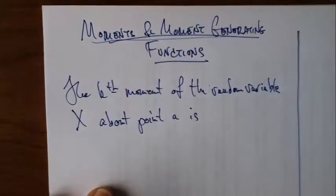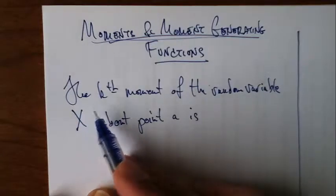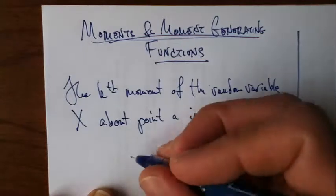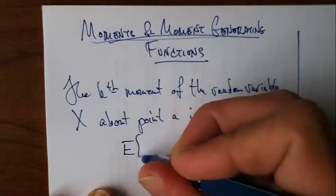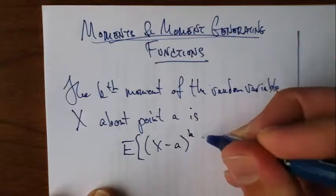Moments and moment-generating functions. So the kth moment of the random variable X about point A is defined to be the expected value of X minus A raised to the kth power.